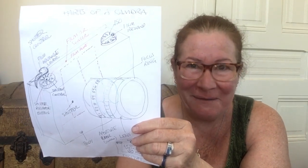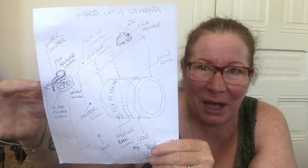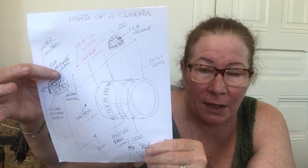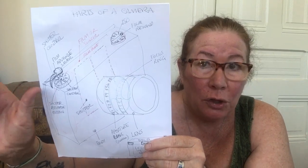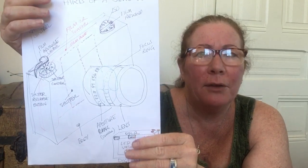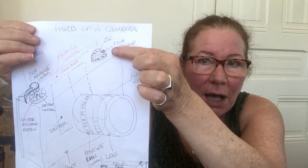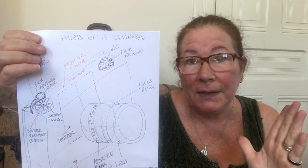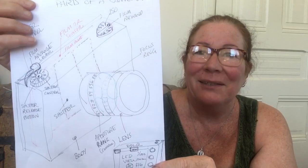Right behind that we have what we call the film advance lever. If you had a film camera, you would move that forward to advance the film. This is a fully manual SLR camera. On the other side you'd have a dial that sets the ISO and a film rewind. When the film runs out, you would rewind it onto the roll, take it out of the camera, and take it in to get developed.